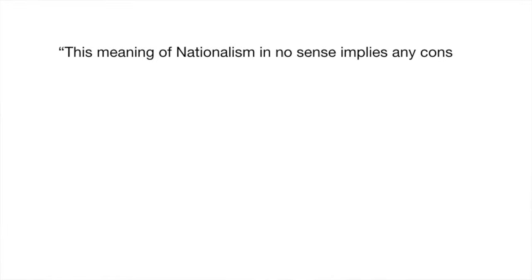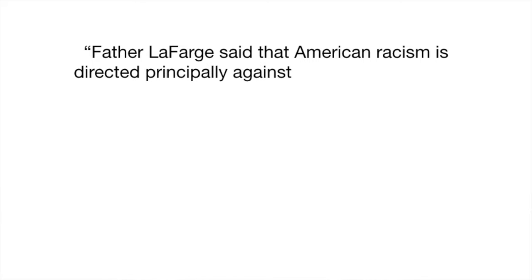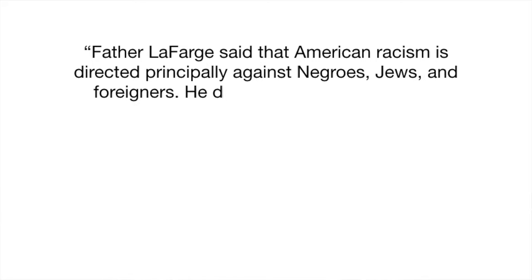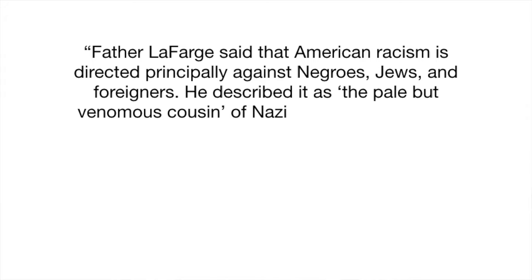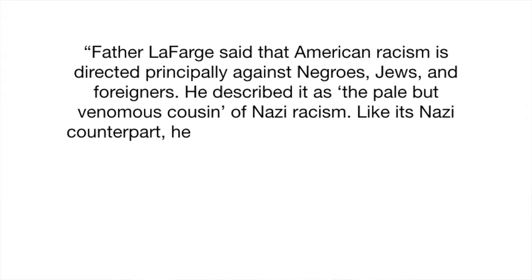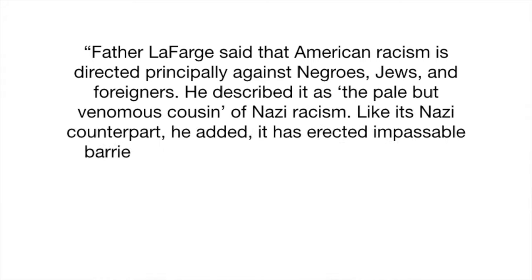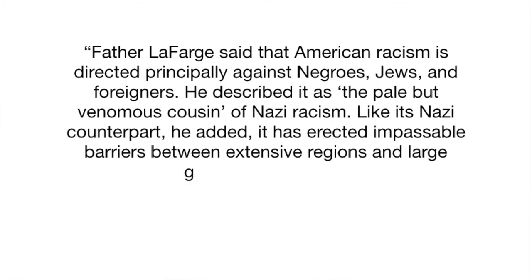Here are some original uses of the word racism during the 1920s: "The meaning of nationalism in no sense implies any consent to the doctrine of racism, which holds that unity of racial origin is the main principle of unity for civil society and that members of each ethnical branch should properly aim at grouping themselves together into so many national states." Father Lafargue said that American racism is directed principally against Negroes, Jews, and foreigners. He described it as the pale but venomous cousin of Nazi racism. Like its Nazi counterpart, he added, it has erected impassable barriers between extensive regions and large groups of people.